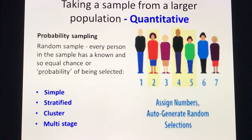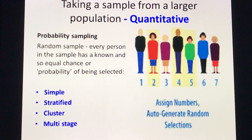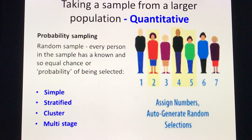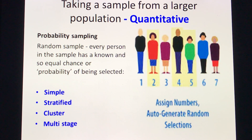When taking a sample from a larger population, such as in quantitative studies, a random sample simply means every person in the sample has a known and equal chance or probability of being selected. Examples of random sampling would be assigning numbers or auto-generating random selections.